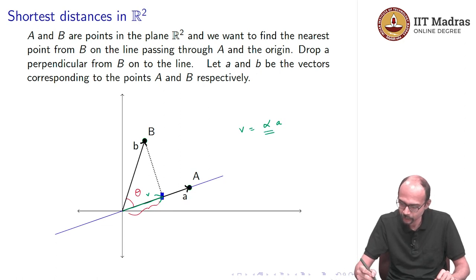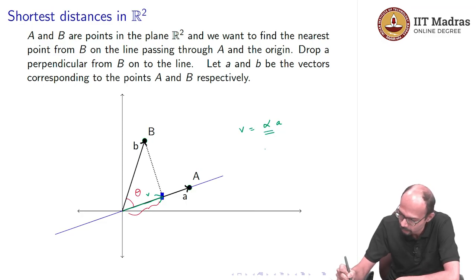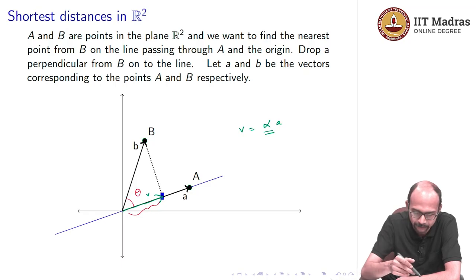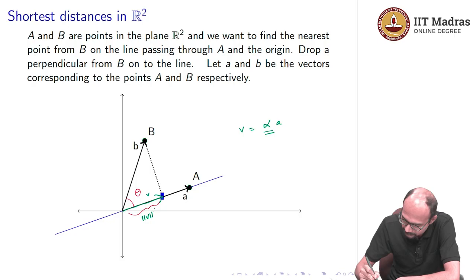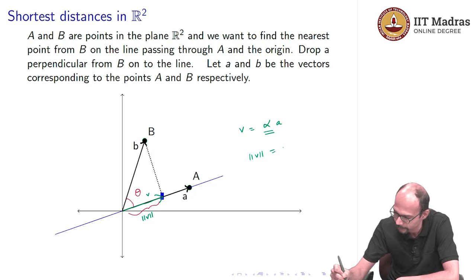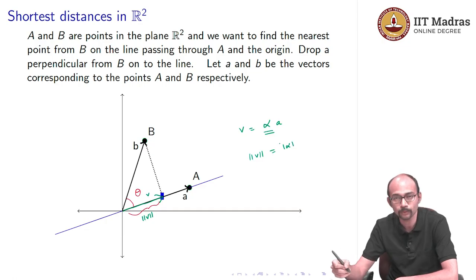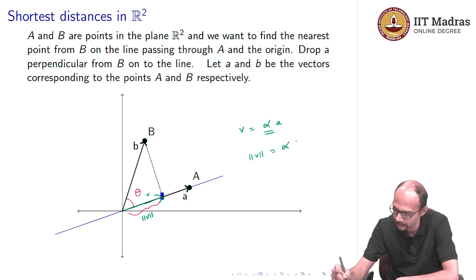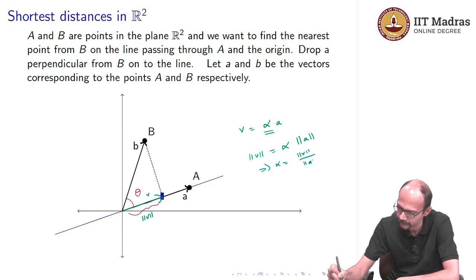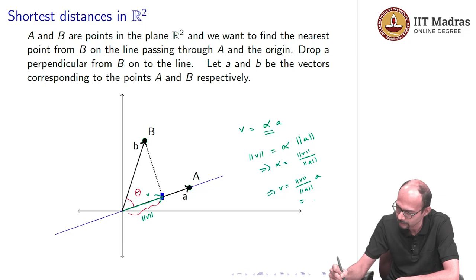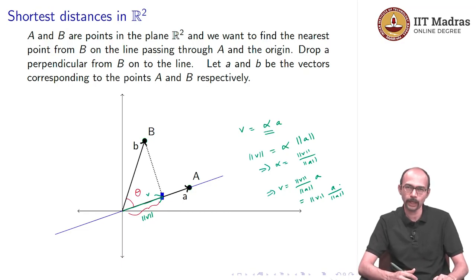If the norm of V equals alpha times the norm of A (since alpha is positive), then alpha equals norm of V divided by norm of A. Therefore, V equals (norm of V / norm of A) times A, or equivalently, norm of V times (A / norm of A). Here A / norm of A is a unit vector in the direction of A, and multiplying by norm of V gives exactly V. Since we know point A, we know the norm of A; what we really need is the norm of V.